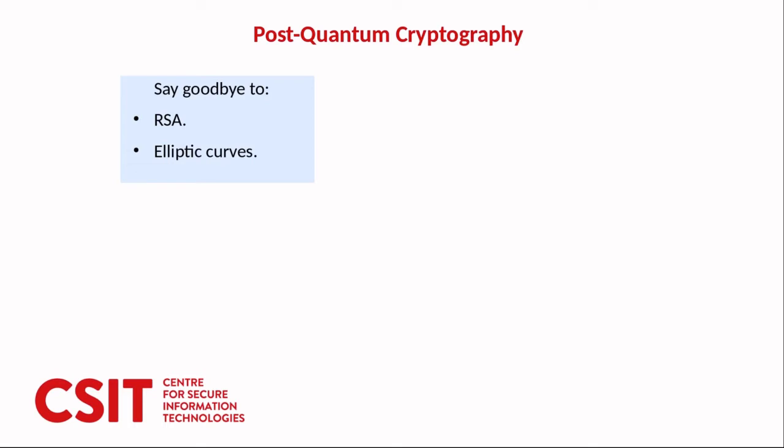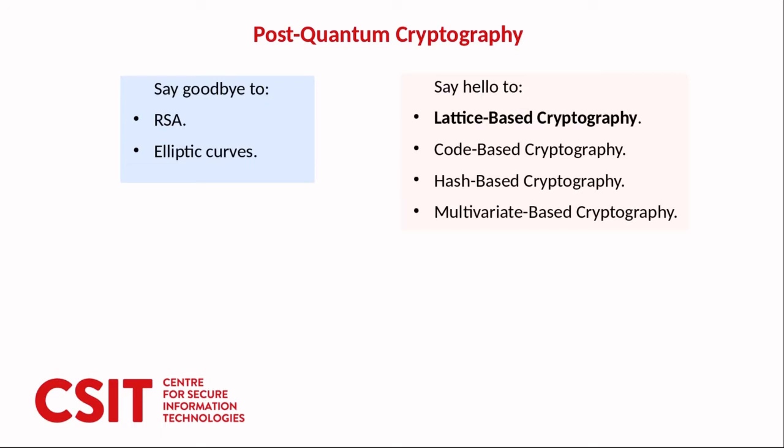So we can say goodbye to RSA and elliptic curves and we can say hello to lattice-based cryptography, code-based cryptography, hash-based cryptography, multivariate-based cryptography and isogeny-based cryptography.